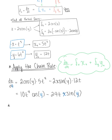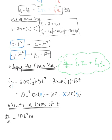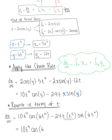So we are now rewriting in terms of t. dz/dt equals 10t to the fourth times cosine of 6t squared, minus 24t multiplied by t to the fifth times sine of 6t squared. Combining those two terms gives us a beautiful final answer of 10t to the fourth times cosine of 6t squared, minus 24t to the sixth times sine of 6t squared.